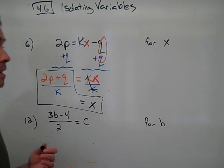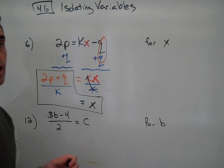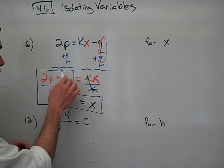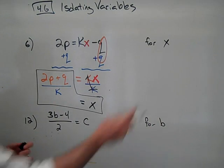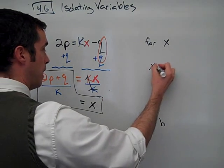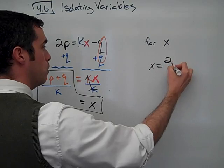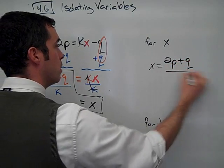It doesn't look as pretty as an answer of x equals 5, but we don't know what p equals, we don't know what q equals, we don't know what k equals. So that is the expression that we get. Solve for x: x equals 2p plus q divided by k.